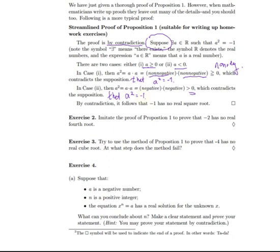And this also contradicts the supposition that a squared is equal to minus one. So, we've been unable to find a real number whose square is negative. So, in either case, we contradict the supposition. That means the supposition cannot be true. By contradiction, it follows that minus one has no real square root. So, that's a proof by contradiction.